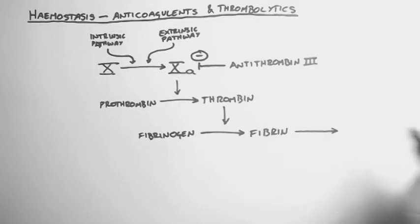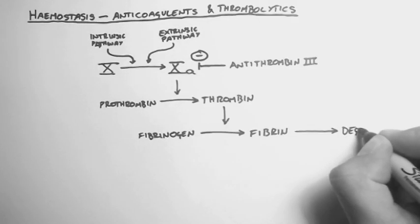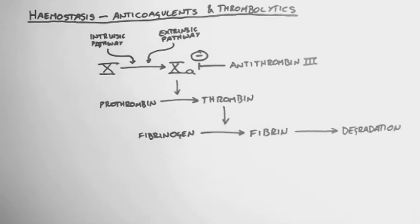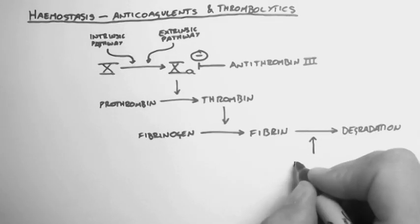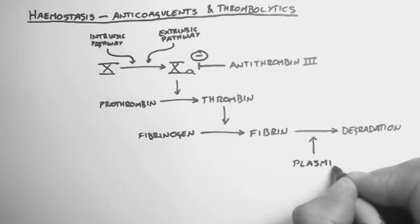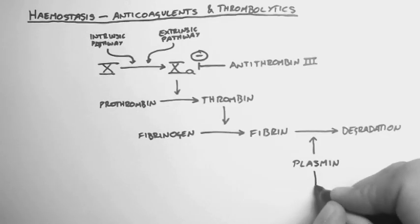Fibrin can also be broken down in the body into fibrin degradation products. And this is catalyzed by an enzyme called plasmin, which is created from a protein called plasminogen.